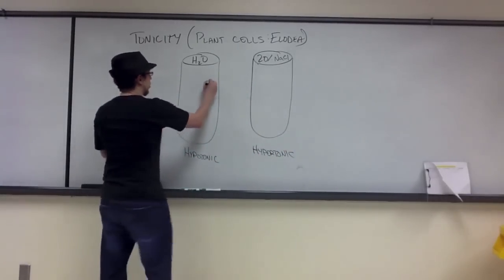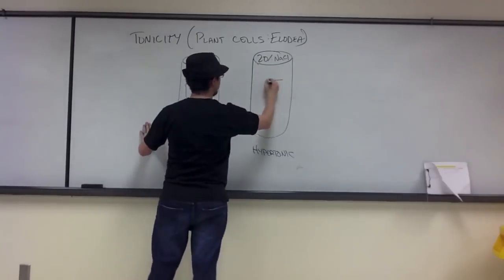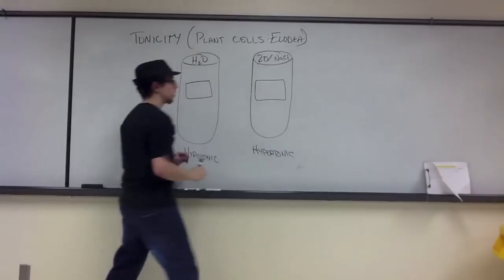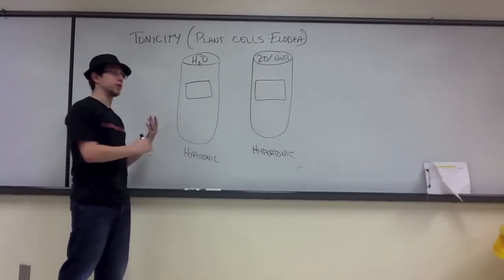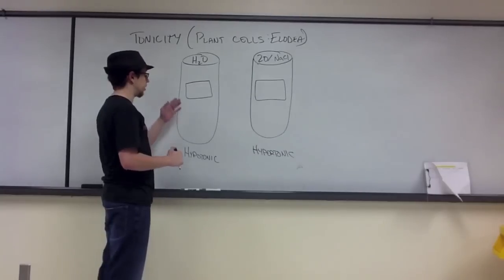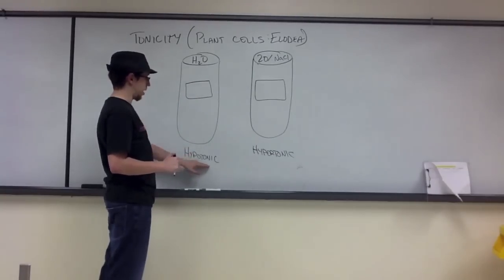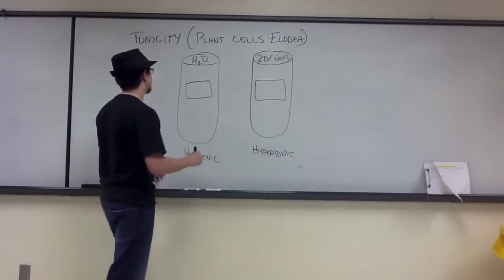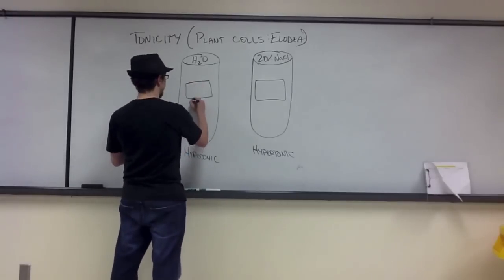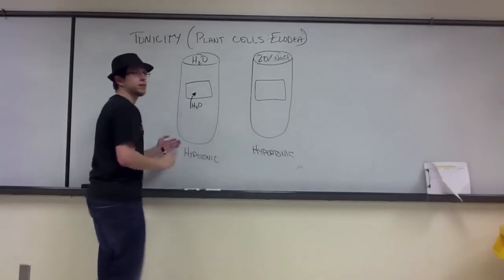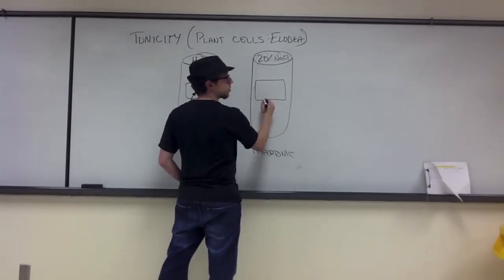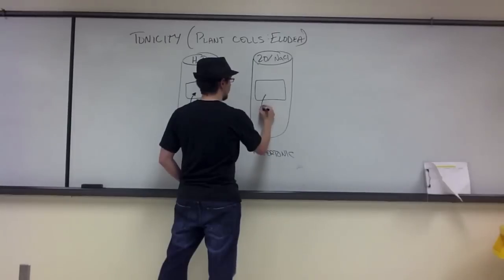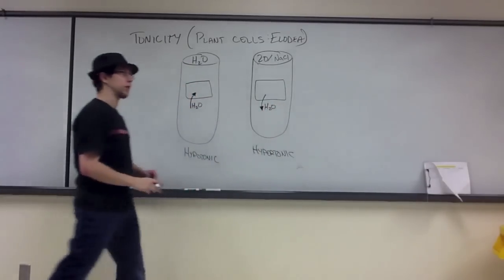If we draw our plant cell in both instances, knowing the direction in which the majority of water will diffuse initially — in a hypotonic solution, water is going to move into the elodea leaf cell. Whereas in the hypertonic solution — the 20% sodium chloride — water is going to rush out of that elodea leaf cell.